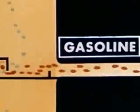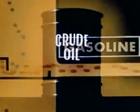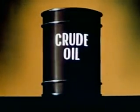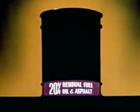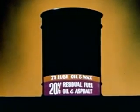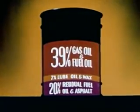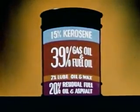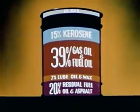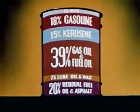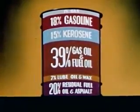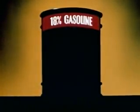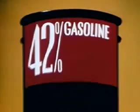In the average crude oil, only a limited amount of gasoline is present. From simple distillation, a barrel of crude oil produces 20% residual fuel oil and asphalt, 7% lube oil and wax, 39% gas oil and fuel oil, 15% kerosene, 1% gas, and gasoline — only 18%. Not nearly enough for today's millions of cars. But scientists of the Standard Oil Company, Indiana, invented the cracking process, enabling refiners to make more than twice as much gasoline from each barrel of crude. Today, were it not for the demands for fuel oil and diesel fuel, almost the whole barrel could be converted into gasoline.